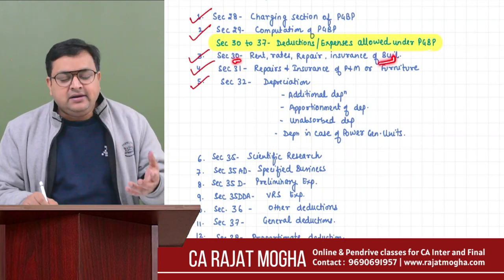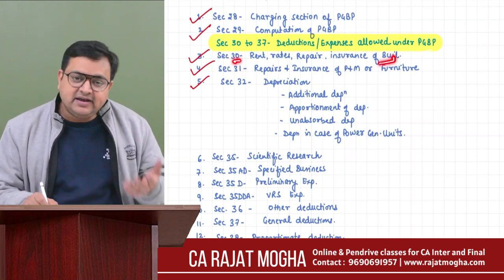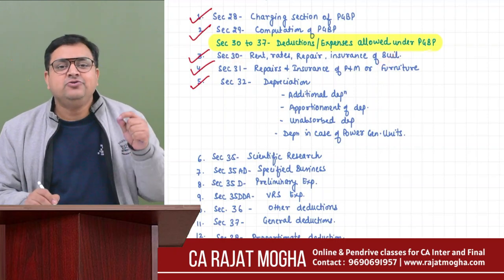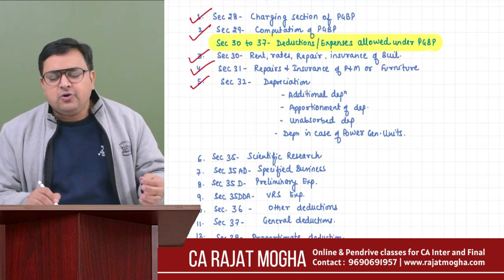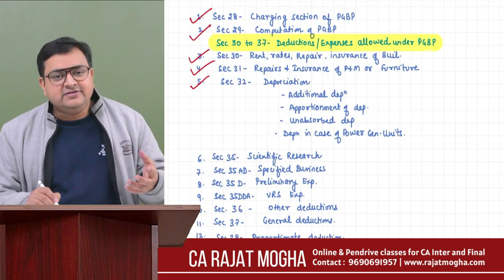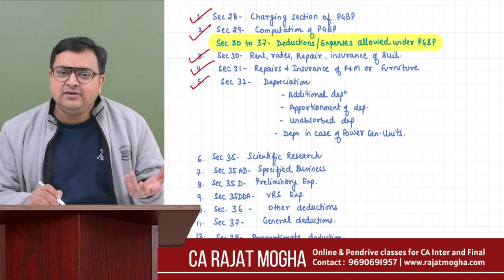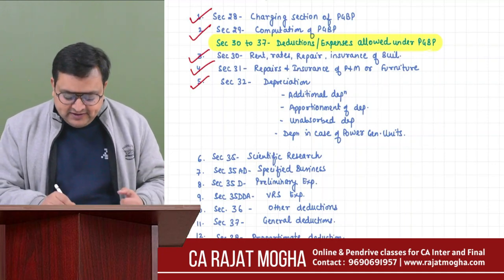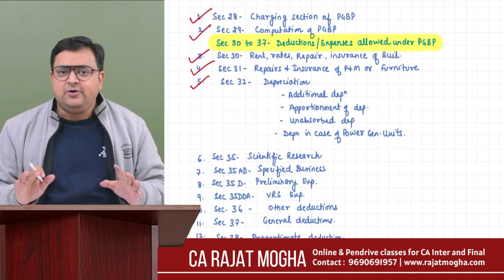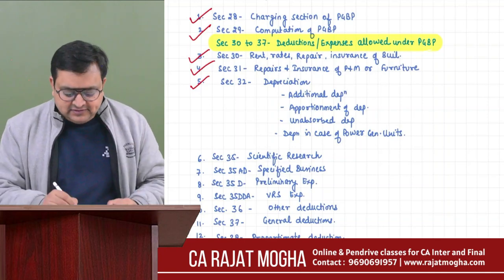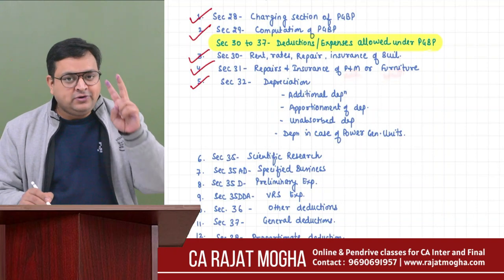Section 30 covered rent of building, repairs of building, insurance of building, rates and taxes of building - that building which you use in your business. It could be your factory, godown, showroom, or even residential accommodation provided to your employees, because that building is also used in business.